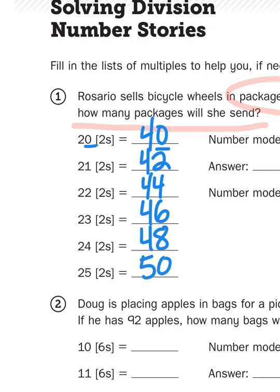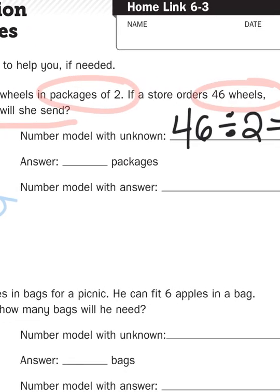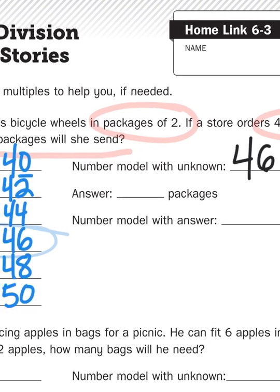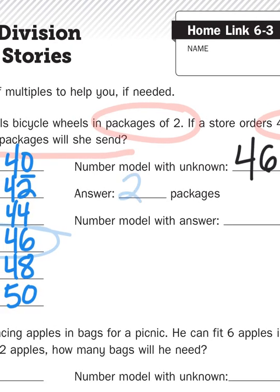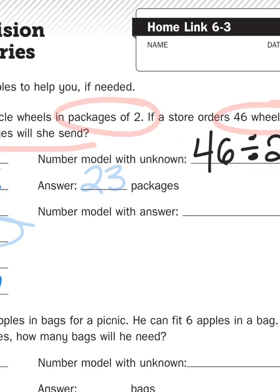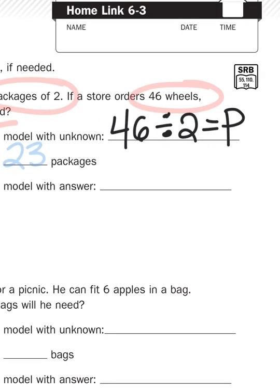Now, we were told they want to divide 46 wheels into groups of 2, and as you can see right here, 23 twos is the equivalent of 46. That means I would have 23 packages of wheels because 2 times 23 is 46.